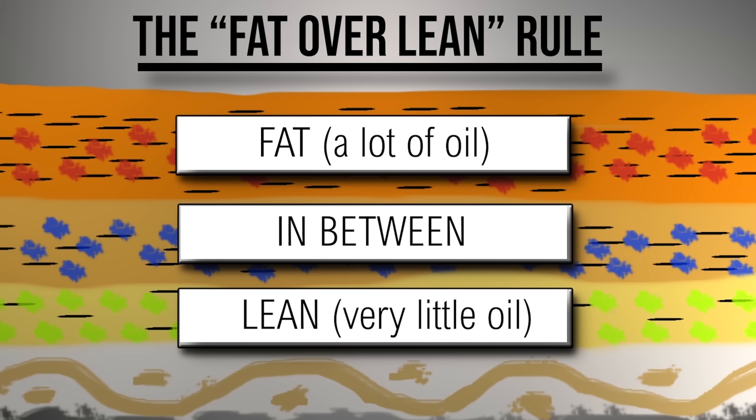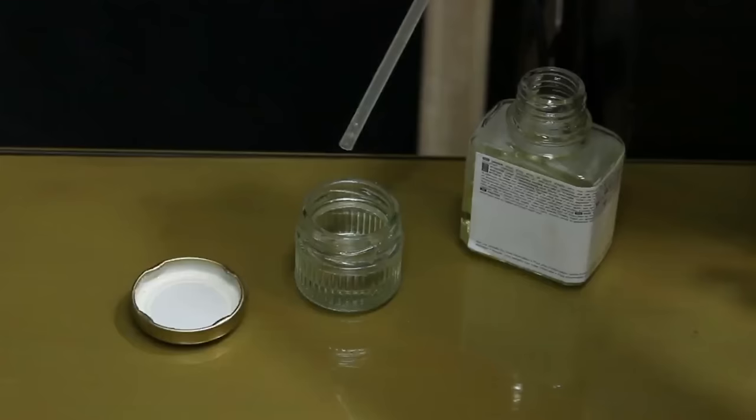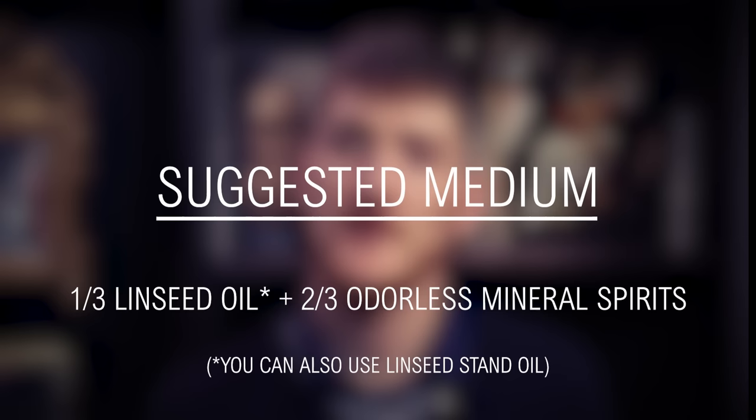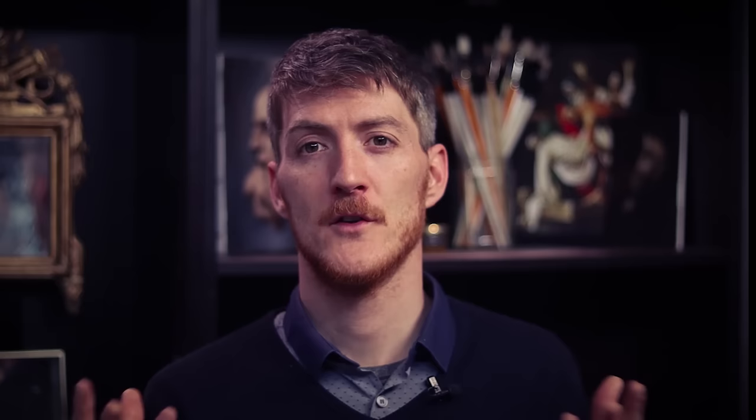The general rule with oil painting is to paint fat over lean. It means that when you paint layers on top of each other, each new layer needs to have a little bit more fat — more oil — than the previous layer. I suggest that you use a medium that is one third linseed oil and two thirds odorless mineral spirits, something like Gamsol or Sansodor. If you don't want to prepare it yourself, you can also use an alkyd medium like Liquin or Galkyd.